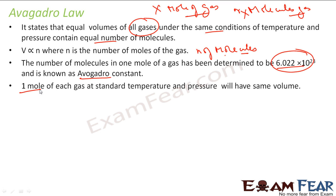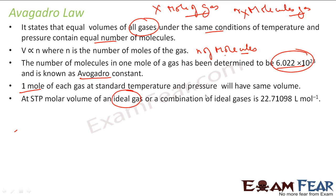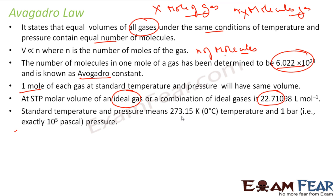So if you see, one mole of each gas—you take any gas—under standard temperature and pressure will have the same volume. At STP, the molar volume of ideal gas or combination of ideal gases is 22.7 liters per mole. This is my volume of ideal gas at STP. And STP means 0 degrees Celsius, that is 273.15 Kelvin, and 1 bar, that is 10^5 Pascal pressure.